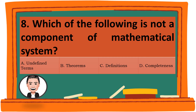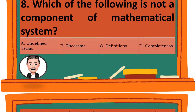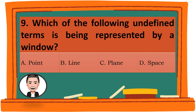Question 9. Which of the following undefined terms is being represented by a window? A. Point. B. Line. C. Plane. D. Space. The correct answer is C. Plane.